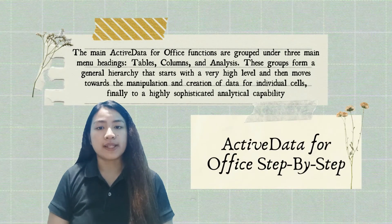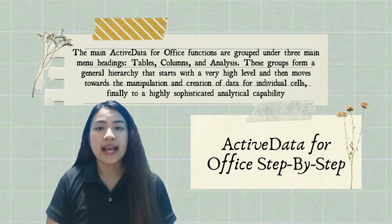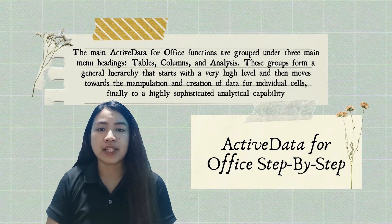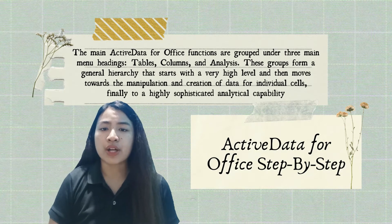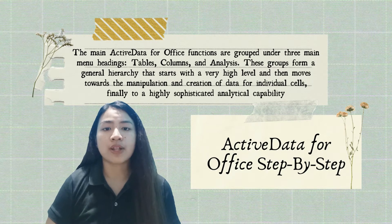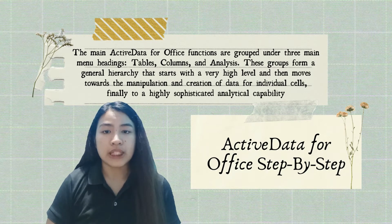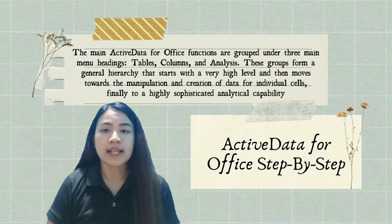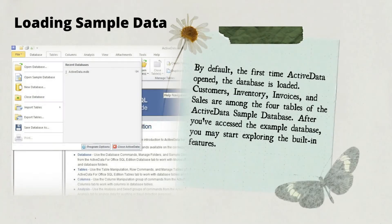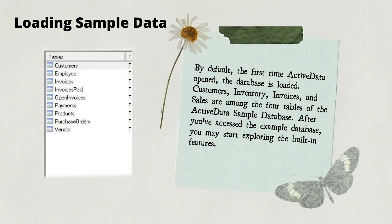Active Data for Office Step-by-Step: Tables, Columns, and Analysis are the three major headings for Active Data for Office operations. These groupings create a broad structure that begins at the highest level and goes through data manipulation for individual cells, and eventually to very complex analytical capacity. By default, the first time Active Data is opened, the database is loaded. Customers, inventory, invoices, and sales are among the four tables of the Active Data sample database. After accessing the example database, you may start exploring the built-in features.